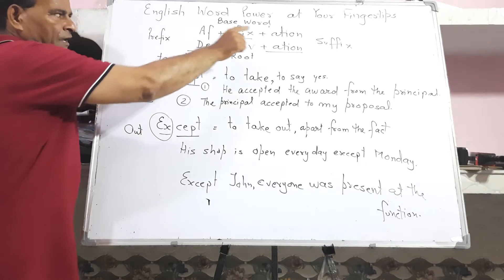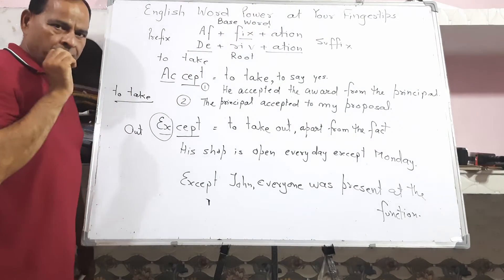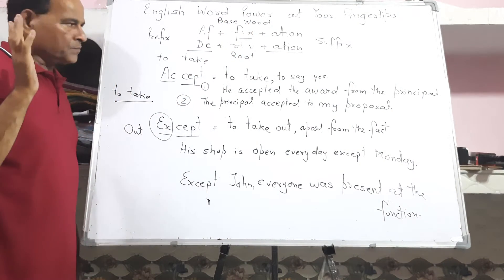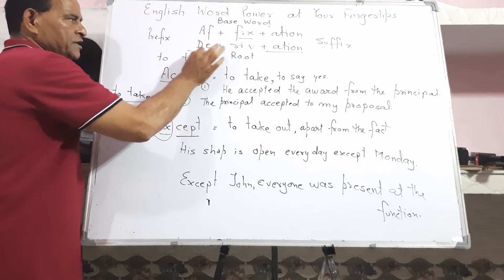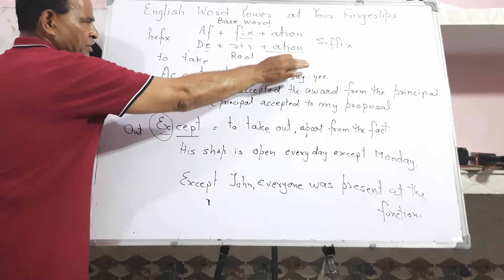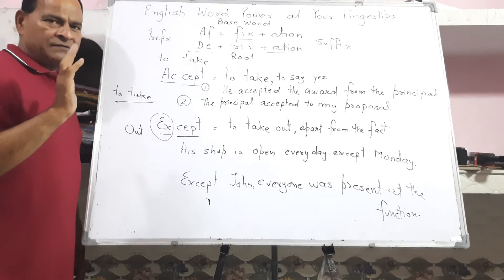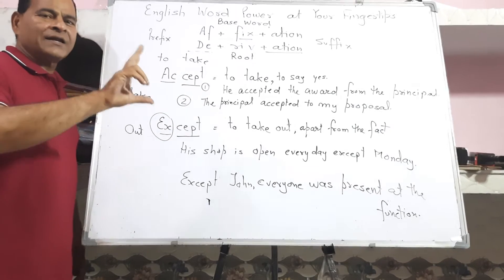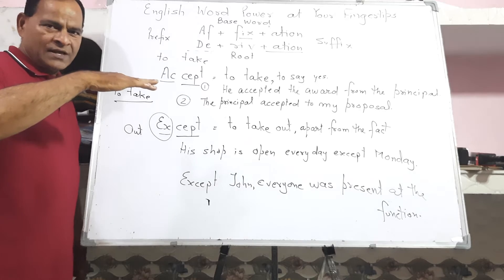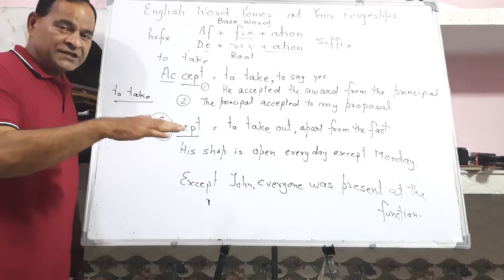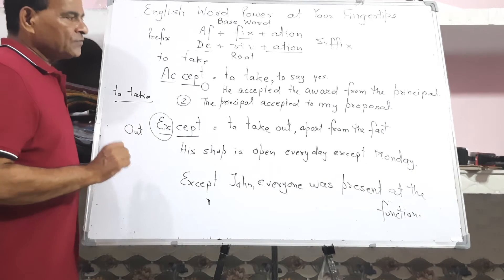The prefix comes before the word, the suffix comes after, and the base is called the primary word or root. As far as derivation is concerned, the prefix comes at the beginning, the suffix at the end, and the root is like the root of a plant — the part beneath the earth that you cannot see.